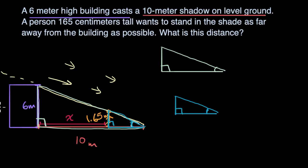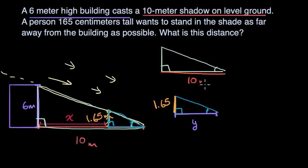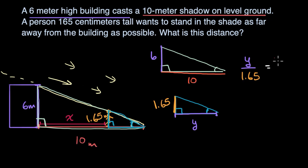Before we think about X, let's call this distance Y. If we can figure out Y, we just subtract Y from 10 and we'll figure out X. We already know the height is 1.65 meters, the base of the big triangle is 10 meters, and the height of the building is six meters. So we can say Y over 1.65 is going to be equal to 10 over six — making sure I get the corresponding sides.